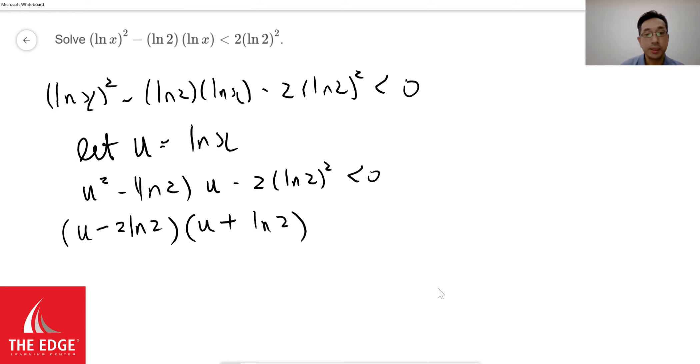That's actually very important because now we know the zeros are when u is equal to 2 ln of 2, and the other one is negative ln of 2.